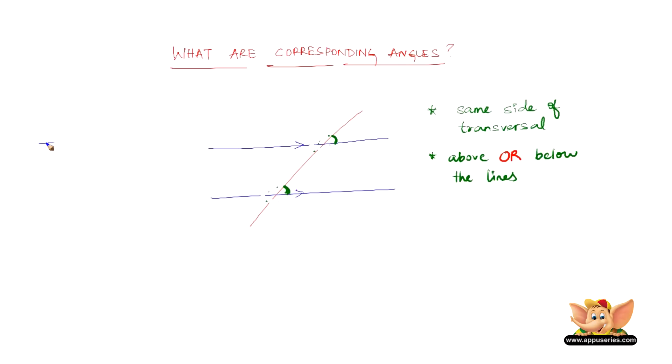Similarly, I'll draw another parallel line, a smaller one of course, meaning let's have a transversal. Another possibility of corresponding is, this angle and this angle are corresponding. We have two parallel lines, and then we have a transversal. This and this can be corresponding.